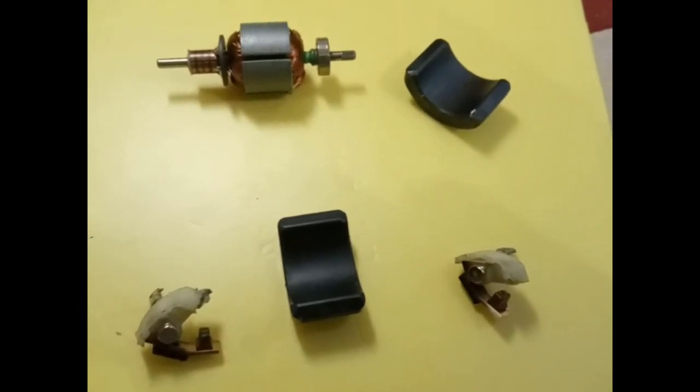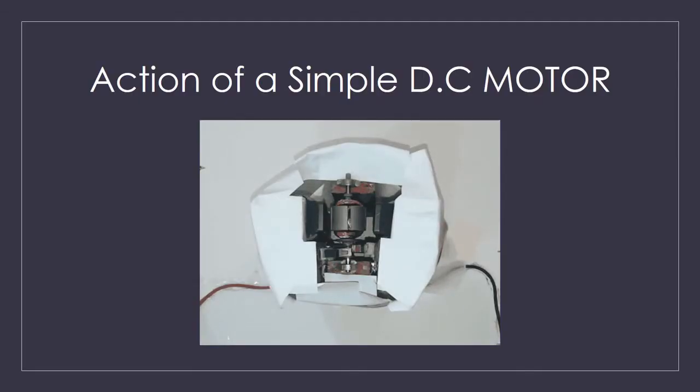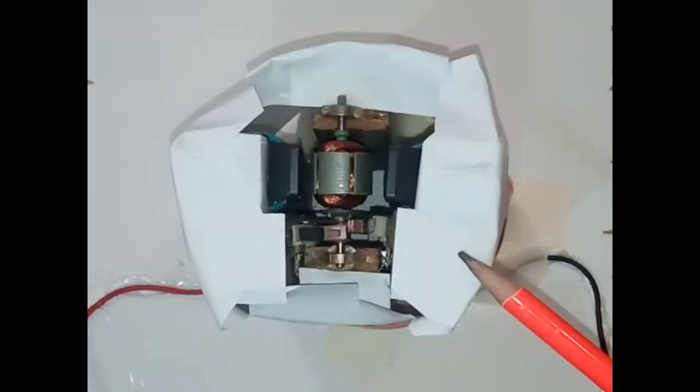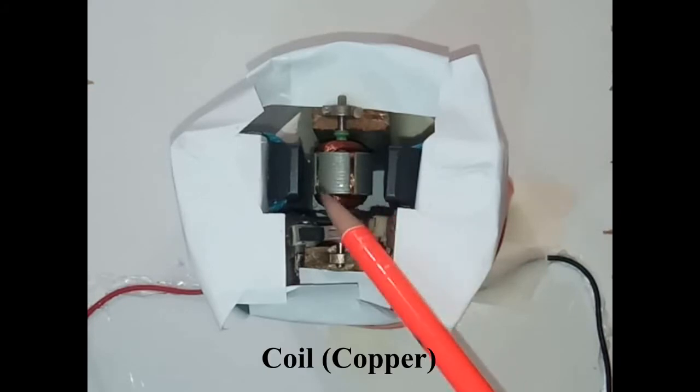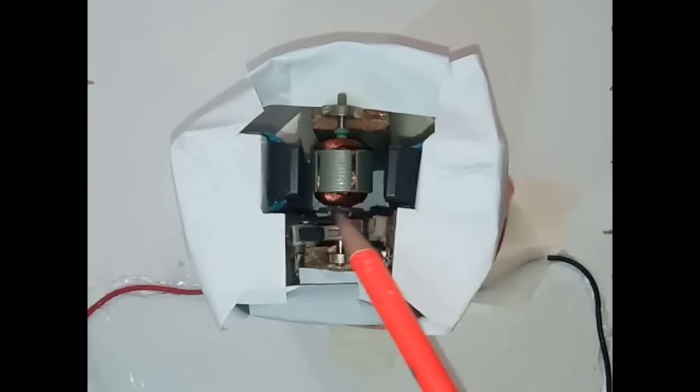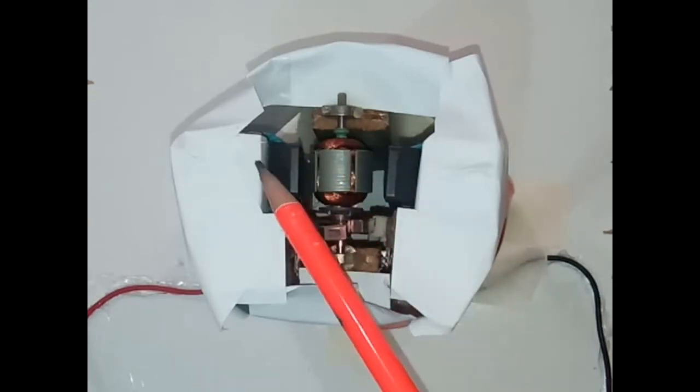Let's have a look at the action of a simple DC motor. Here is a simple DC motor. I have fixed all the parts. Here is the coil made of insulated copper wire. It is free to rotate between the poles of a magnet.